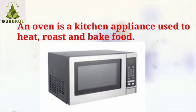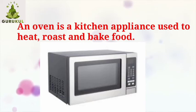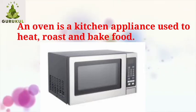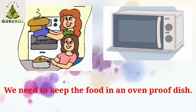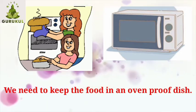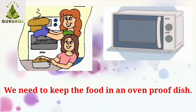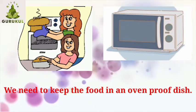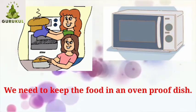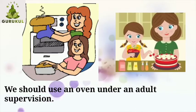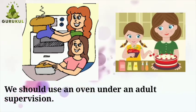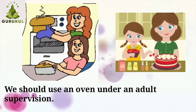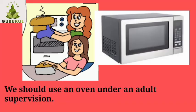An oven is used mainly to cook food. It provides even dry heat to all surfaces of food inside it. We need to keep the food in an ovenproof dish; using any other vessel can be harmful. So we must always keep the food in an ovenproof dish. We should always use an oven under adult supervision.